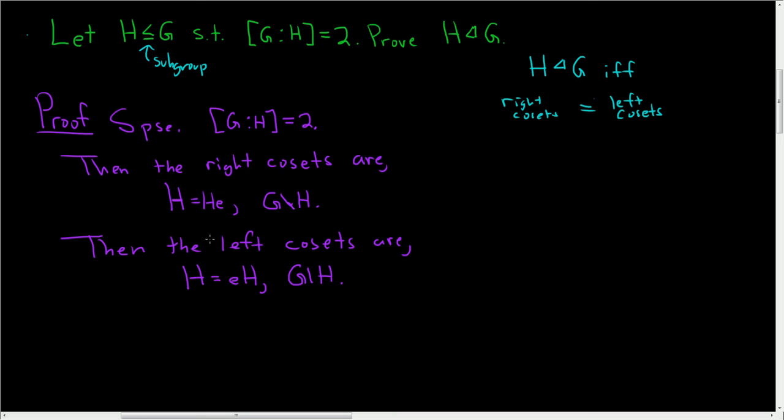Well, look at that. The right cosets are equal to the left cosets. So thus, the right cosets are equal to the left cosets. And intuitively, that's what it means for H to be normal in G. So therefore, H is normal in G.